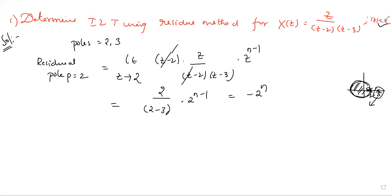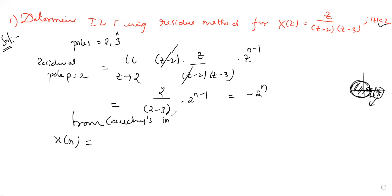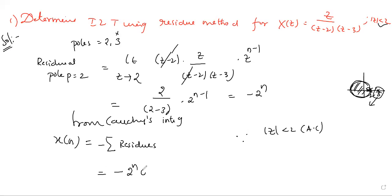Since mod Z less than 2 is given, the ROC is anticausal. We have to take minus the sum of residues. Therefore X of n equals minus of minus 2 to the power n. We can also include u of minus n minus 1 to indicate it is an anticausal sequence. This is the inverse Z-transform for the given function using Cauchy's integral theorem, or the residue method. The factor u of minus n minus 1 indicates this is an anticausal sequence — for sequences, the anticausal unit step reference is u of minus n minus 1, whereas for causal sequences it is u of n.